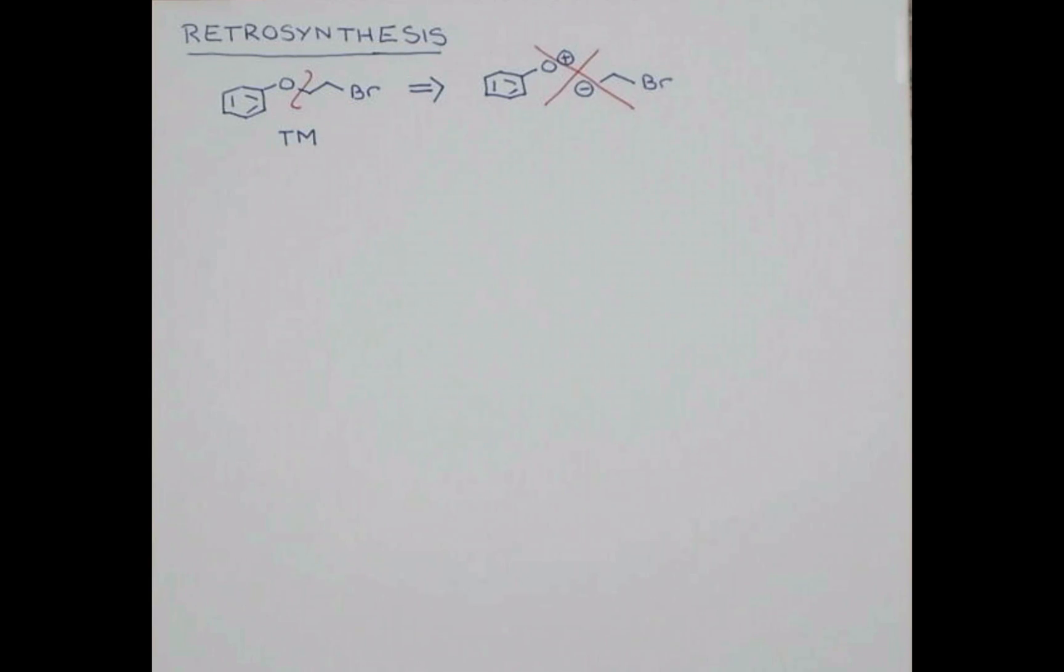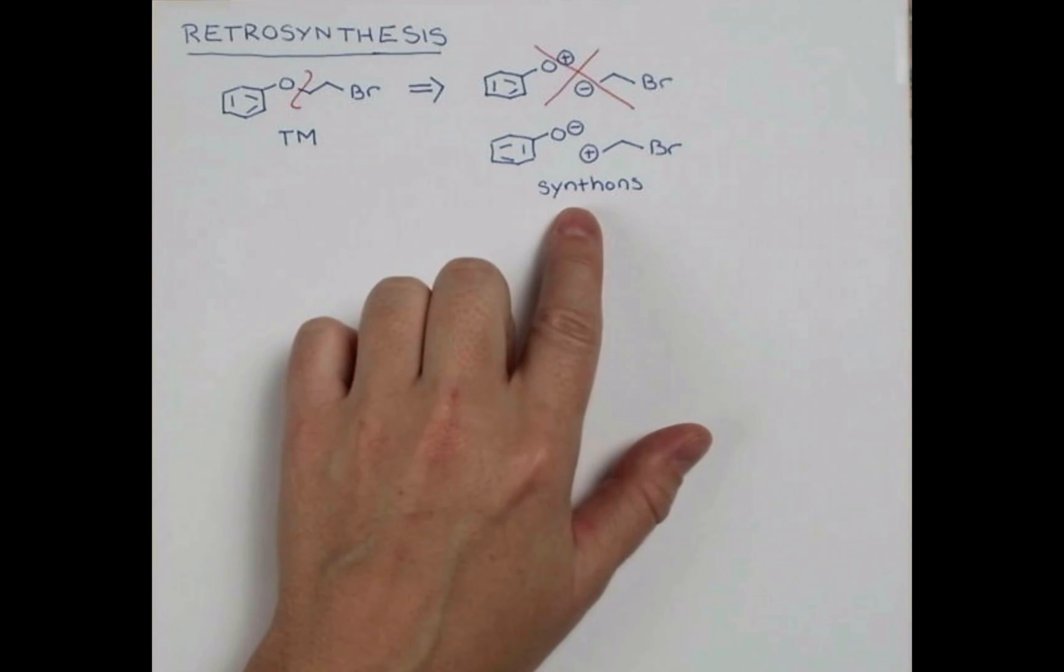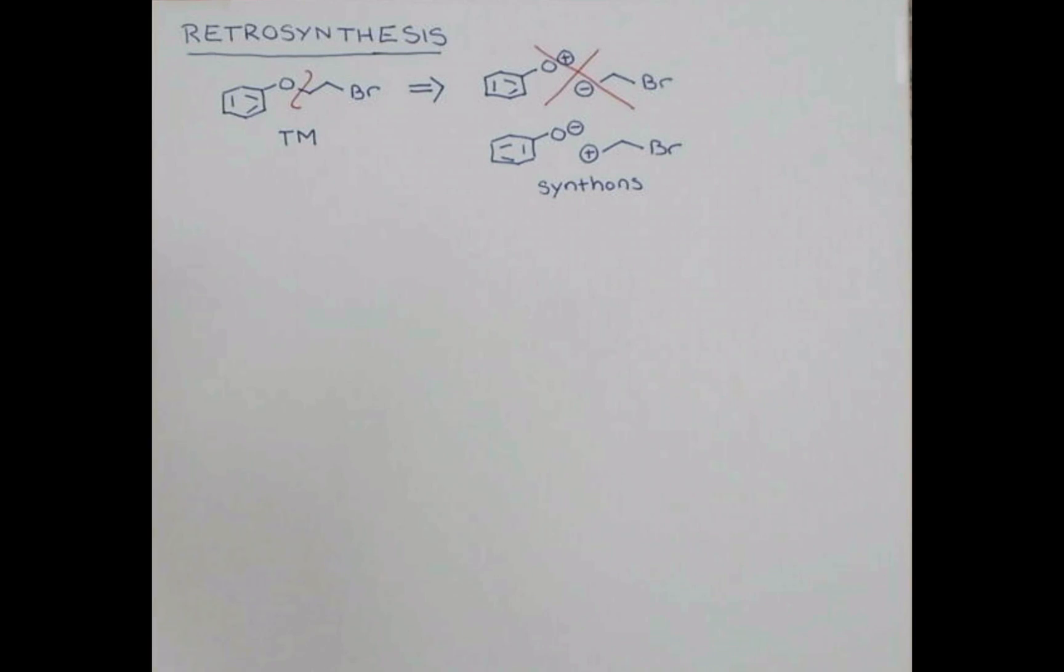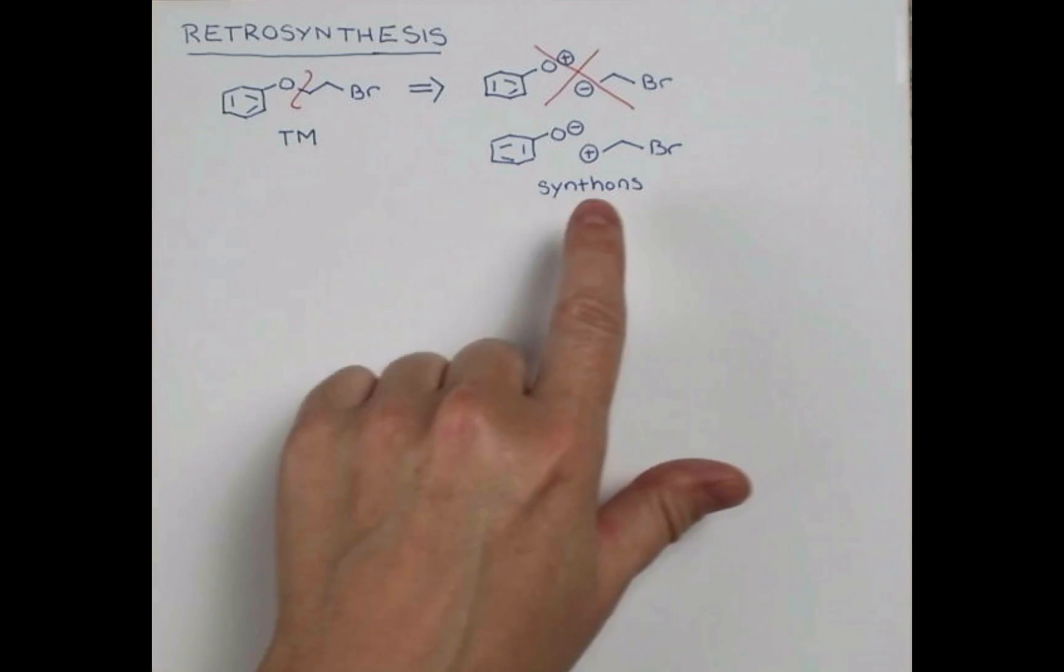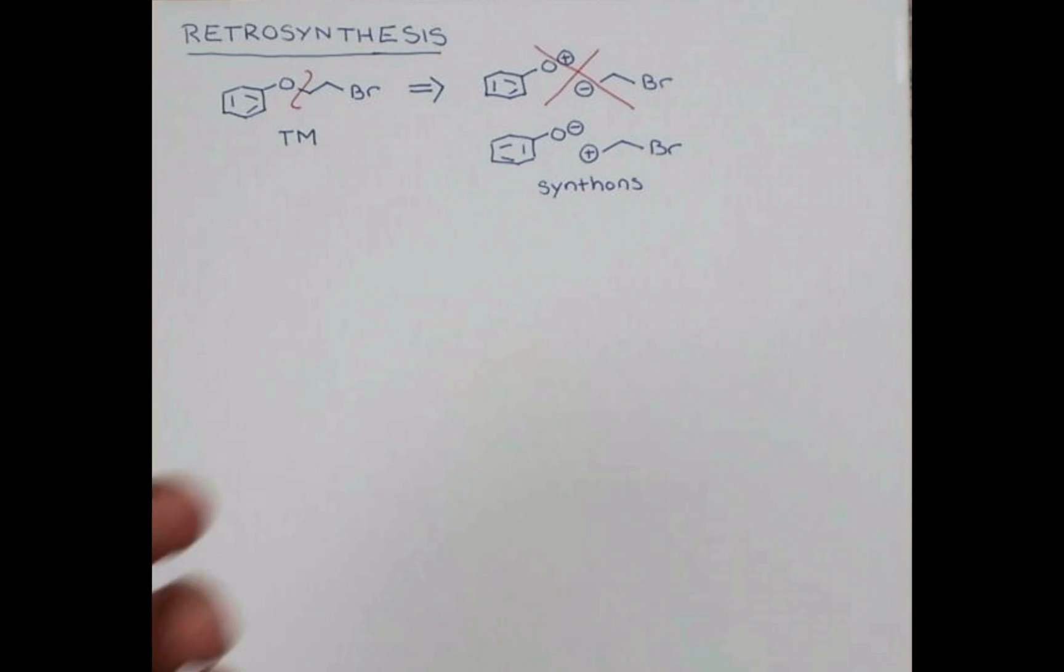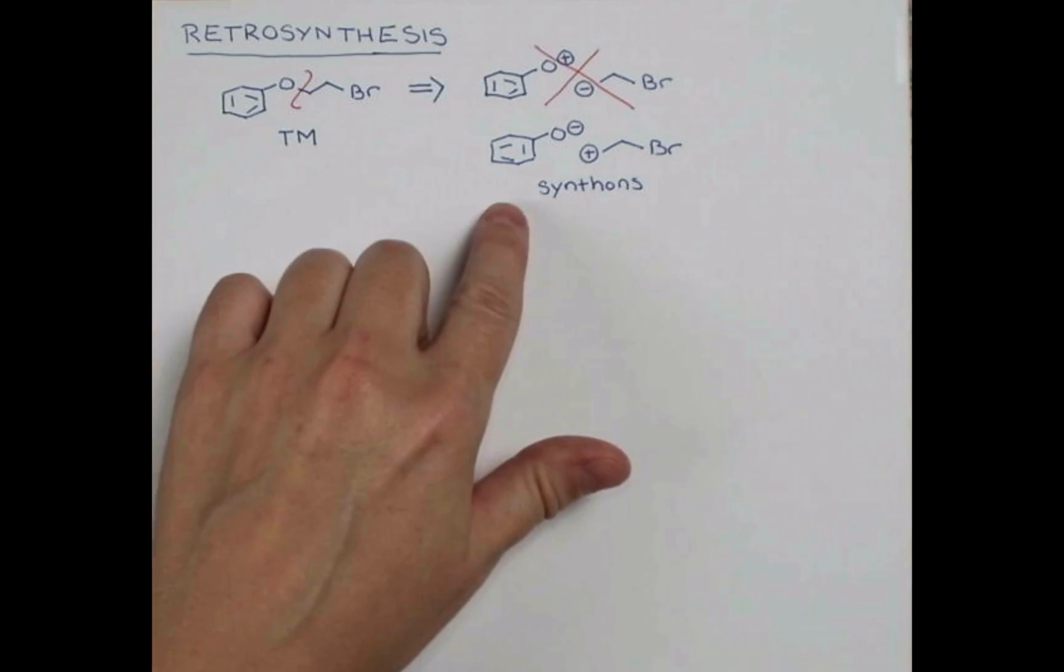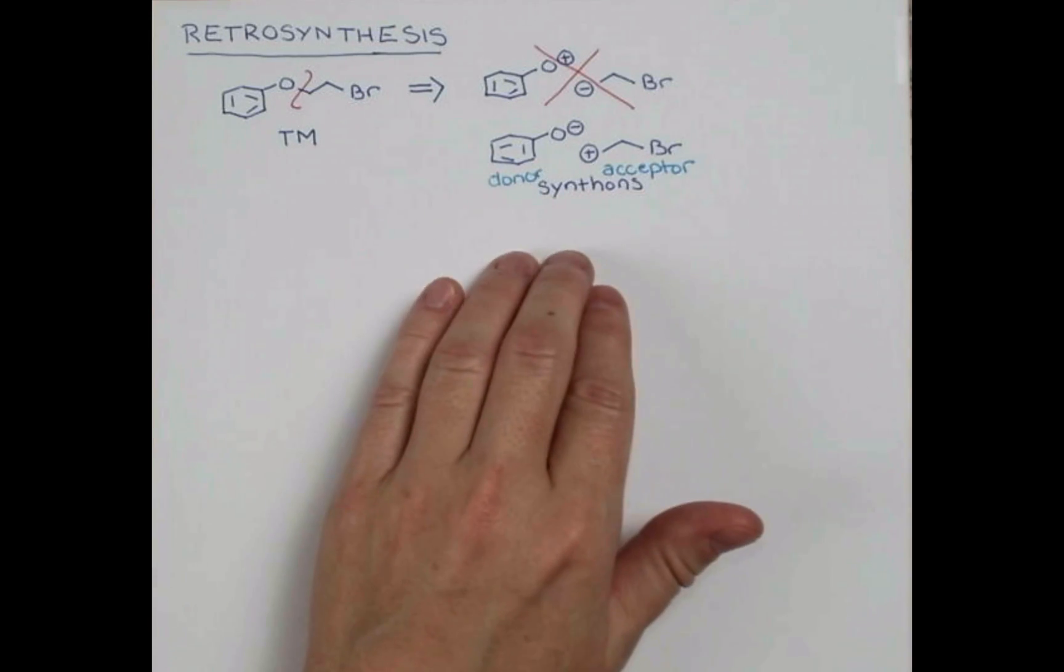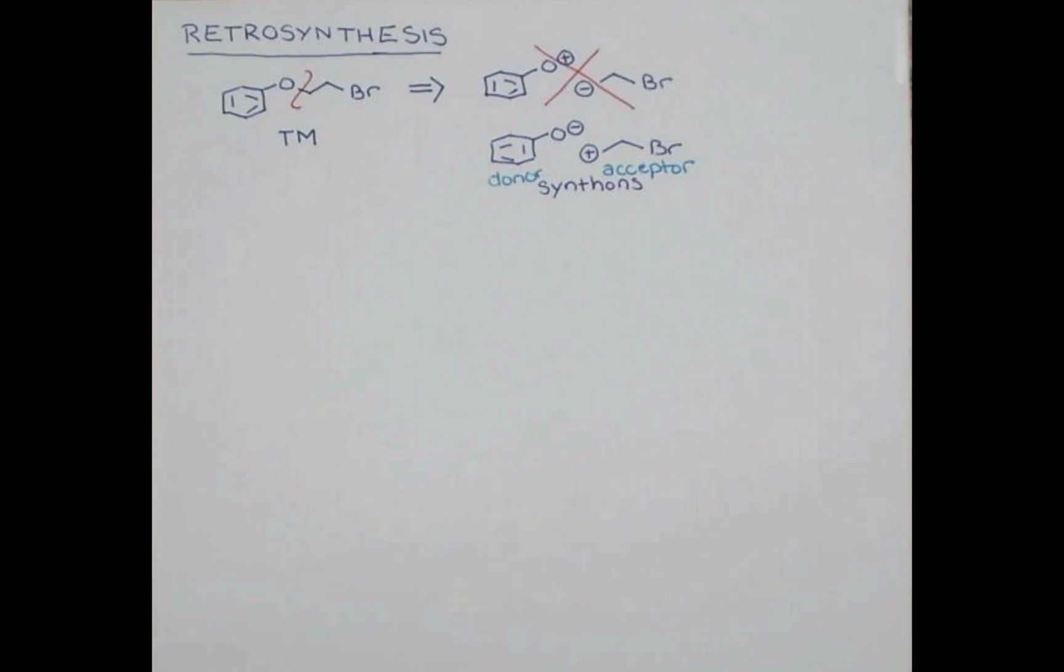Let's redraw them with the correct polarity. Here are our correctly drawn synthons. The oxygen has negative charge. This is natural. Oxygen tends to have negative charge. And this more electropositive carbon has positive character in our synthons. The nucleophilic partner, this one, is going to be called our donor synthon. It donates the electrons. And this one will be the acceptor.